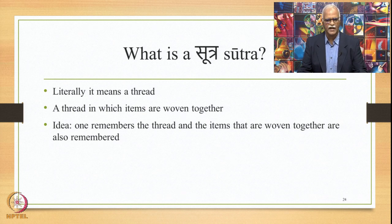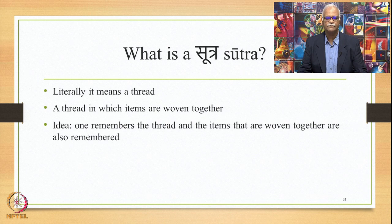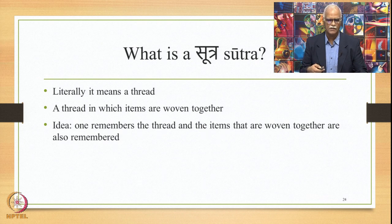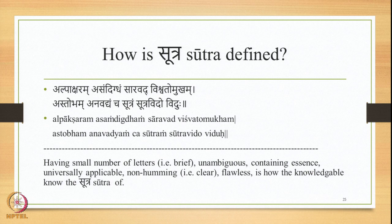Literally, Sutra means a thread — a thread in which items are woven together. The idea behind the concept of Sutra is that one remembers the thread, and the items woven together are also remembered. So if one remembers the rules, one easily remembers the forms generated by the rules, the forms not generated by the rules, and so on. That is the reason why this rule is stated by the Sutra in the Paninian grammar.